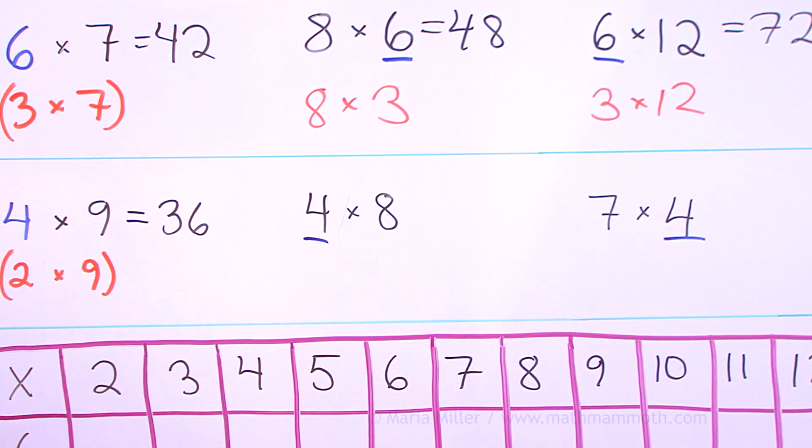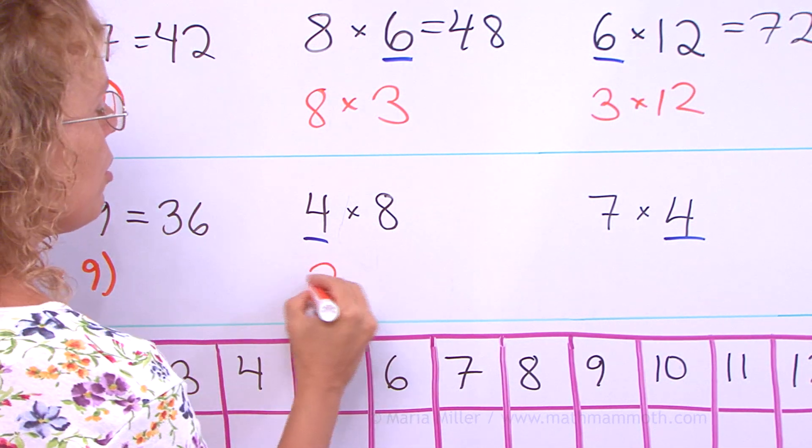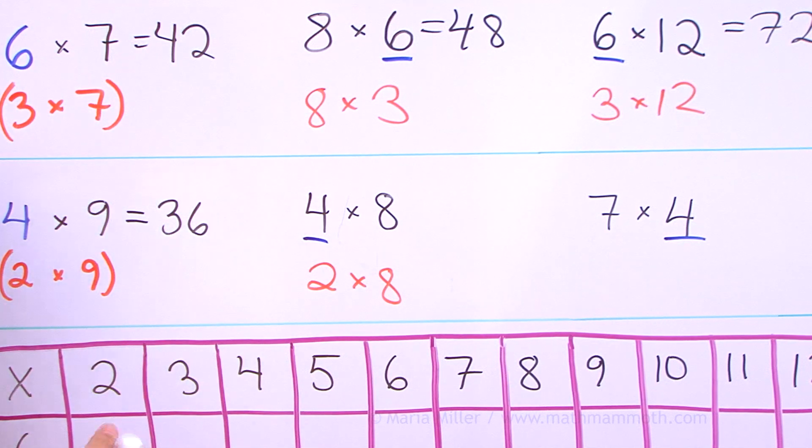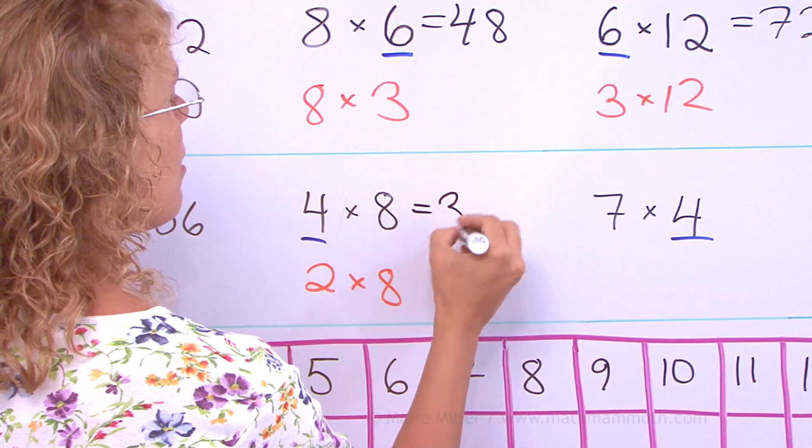4 times 8. You can think of 2 times 8. That's 16. And double that, 32.